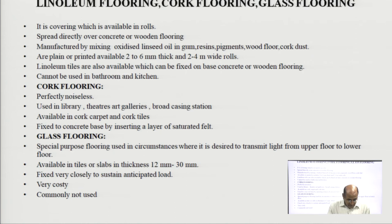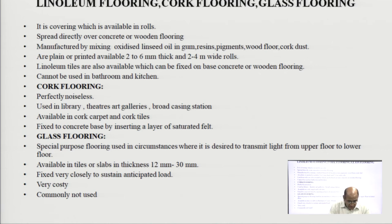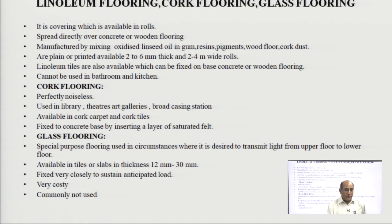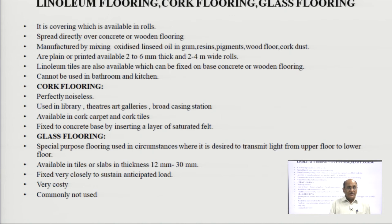Then glass flooring. This is used for a special purpose where it is desired to transmit light from an upper floor to a lower floor or from ground floor to the basement. It is available in tiles and slabs of thickness 12 mm to 30 mm, fixed very closely to sustain the anticipated load. It is very costly and is used only where it is necessary to transmit light from one floor to another; it is not commonly used.